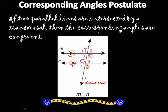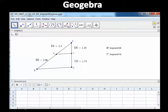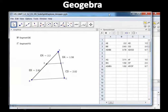Angles 3 and 7 are corresponding and congruent, and angles 2 and 6 are corresponding and congruent. You've got to remember that postulate. Now we're going to look at some GeoGebra — let me pull that up.